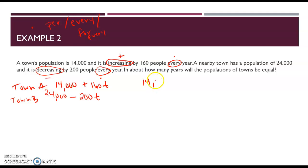14,000 plus 160T equals 24,000 minus 200T. Now, I have T's on both sides of the equal sign. So I want to move them to one side. The negative 200 is my smaller number. And so I'm going to zero it out on this side. I'm going to add it to the other.